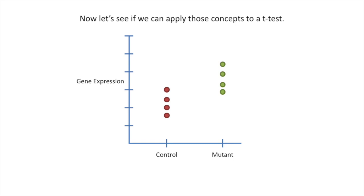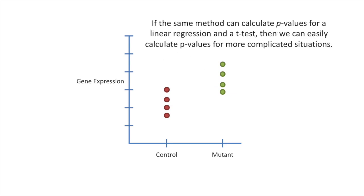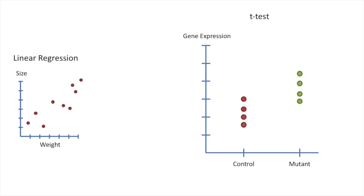Now let's see if we can apply those concepts to a t-test. In this specific example, we're going to be comparing gene expression between control mice and mutant mice. Mutant mice are just normal mice that have a specific gene that's been knocked out and is no longer functioning correctly. The goal of a t-test is to compare means and see if they are significantly different from each other. If the same method can calculate p-values for a linear regression and a t-test, then we can easily calculate p-values for more complicated situations.